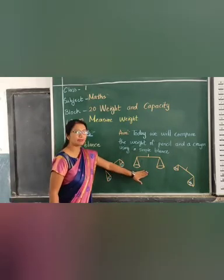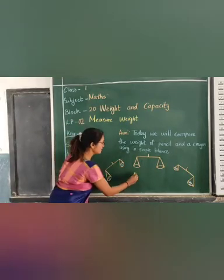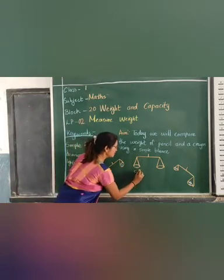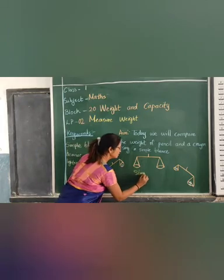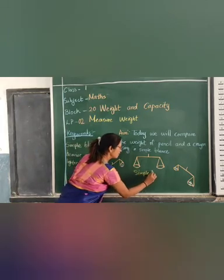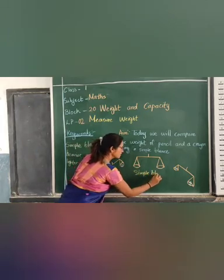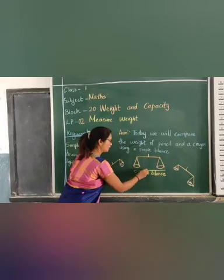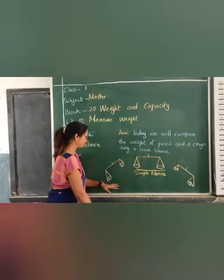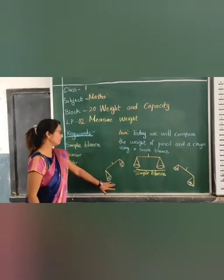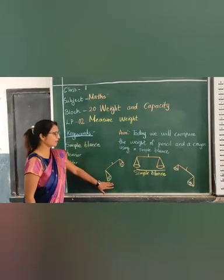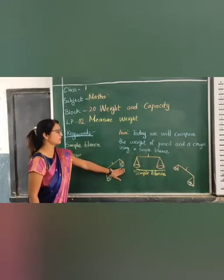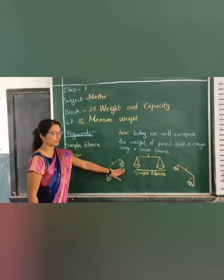This is a simple balance. Both sides are equal. Now see this balance — one side has a mango and one side has a boy.